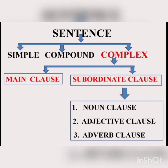With respect to clause, there are three kinds of sentences: simple, compound, and complex. A sentence that has one clause — that is, one subject and predicate — is called a simple sentence. For example: 'I am a teacher.' 'She is a doctor.' 'I wrote a letter to my father.' It will have one subject and a predicate.